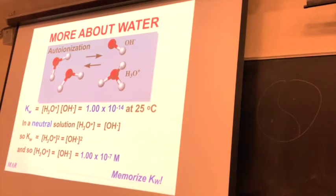What does the W stand for in Kw? Water — it's the water auto-ionization equilibrium constant. There are other compounds that undergo auto-ionization, but this is specifically for water.